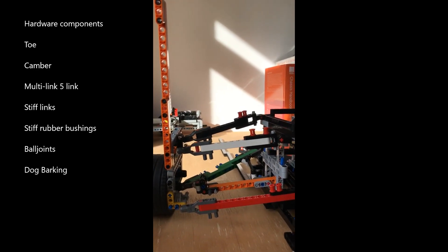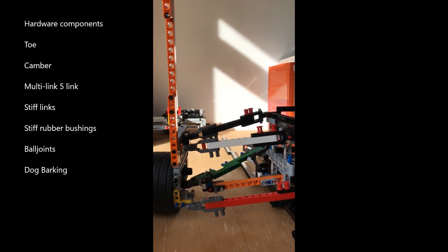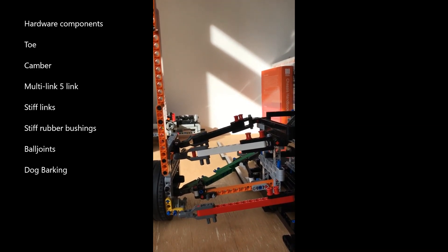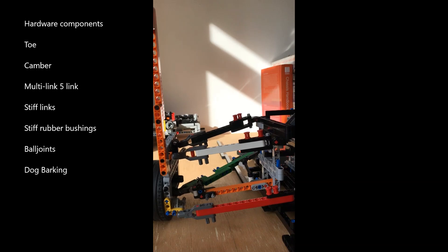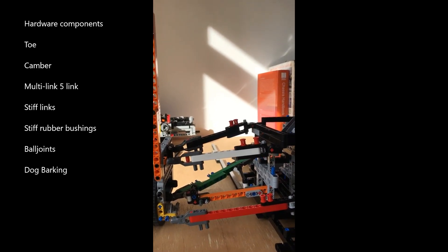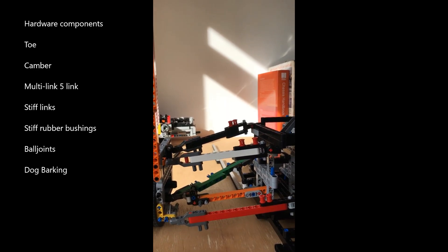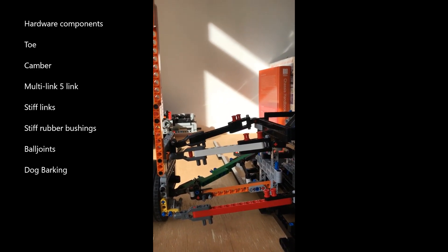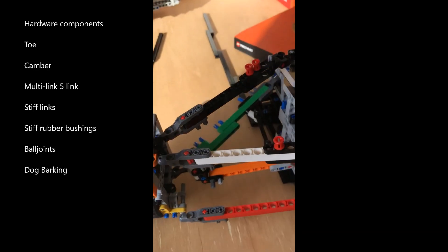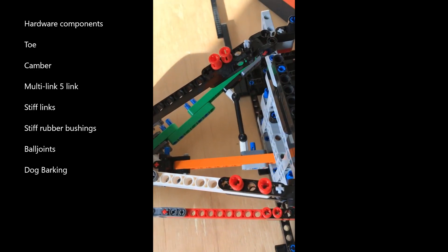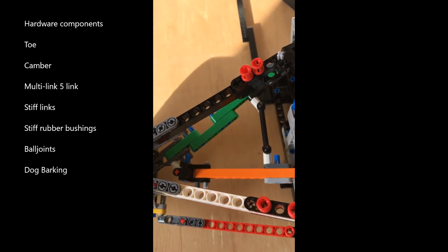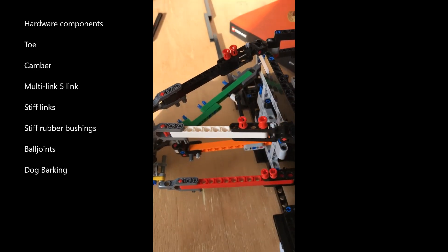So the upper level is afforded two links which are very stiff in compression and tension, and on the lower plane we've got another further three links, so there's your five links or a multi-link. Special to the 993 is the lower link defined by the green and orange, which is actually a wishbone or an A-arm.